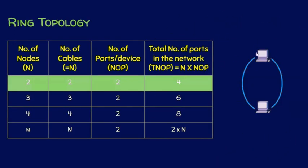In a ring topology, if there are two nodes, then we need two cables — cable 1 and cable 2. Each node needs two ports: port 1 and port 2. Similarly, the other node also has two ports, port 1 and port 2. So a total of four ports are required. Each node must have two ports.